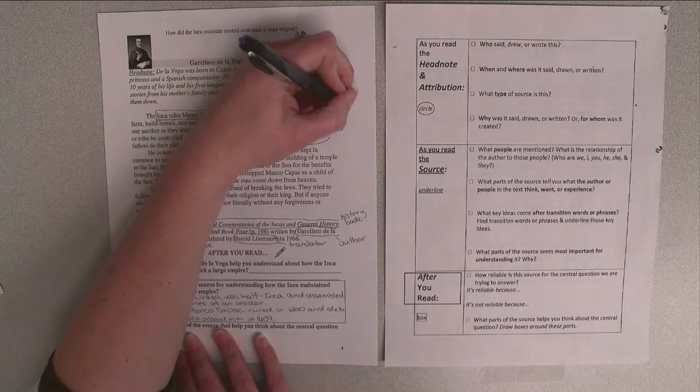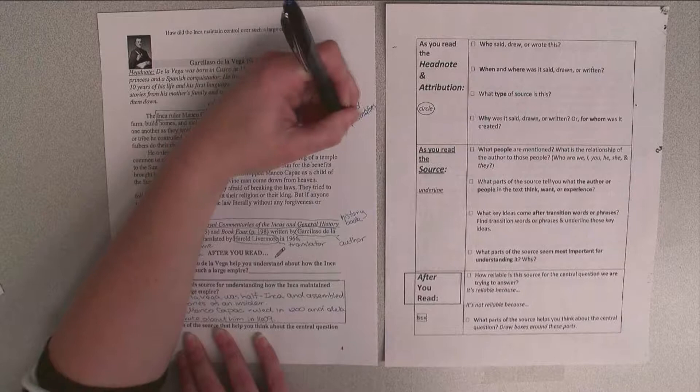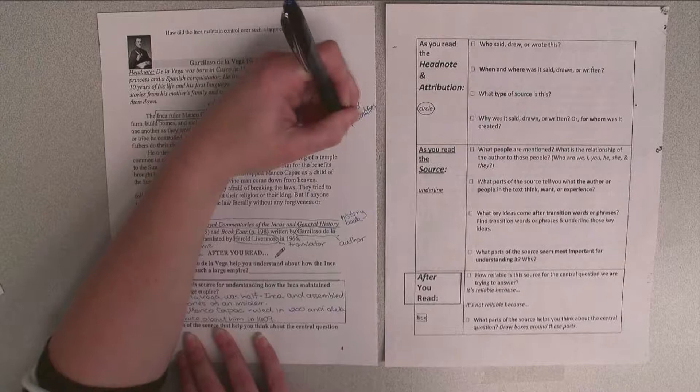And I think that's an important piece of information about the central question because it means he had his people or his representatives all throughout his land. See what else you can box in the rest of the source that helps you answer the central question.